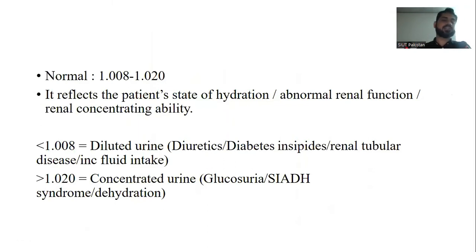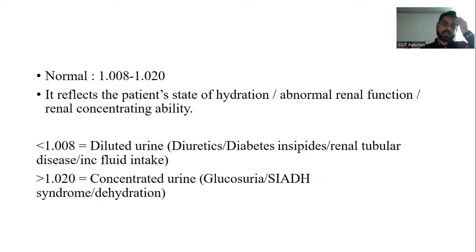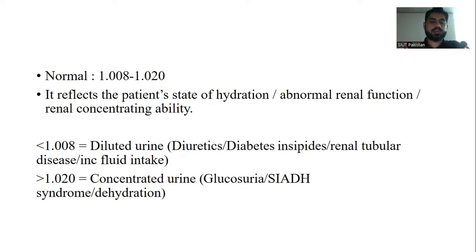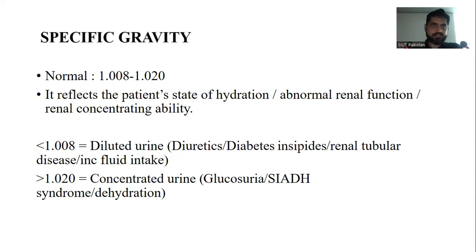Specific gravity: the normal range is 1.008 to 1.020, reflecting the patient's hydration state, renal function, and renal concentrating ability. Less than 1.008 indicates diluted urine, which may be due to diuretic use, diabetes insipidus, renal tubular disease, or increased fluid intake. More than 1.020 indicates concentrated urine, as seen in glucosuria, SIADH, or dehydration. Specific gravity reflects the osmolality of the urine.